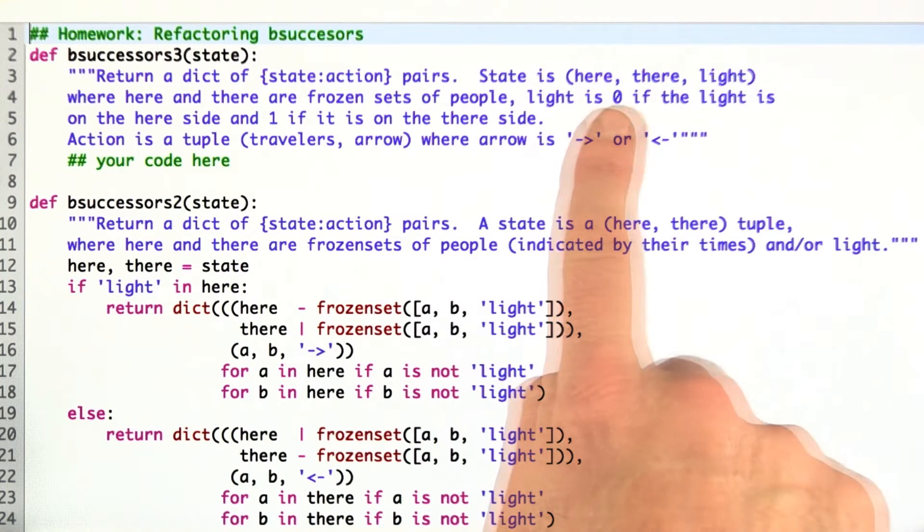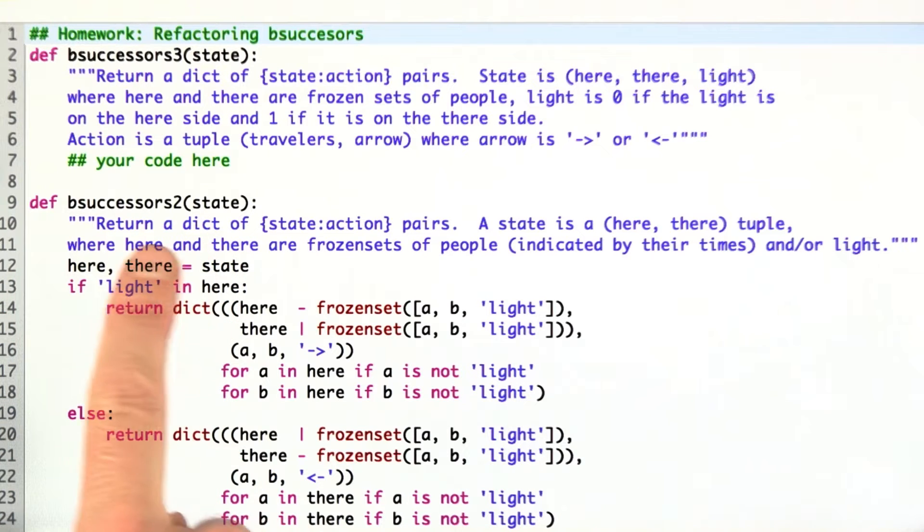We're going to represent them not as a set that included the light, because in the old bridge successor function, bSuccessor2, it just seemed kind of complicated that I had to deal with a special case of are the elements of the sets on the here and there side, are they people or are they the light? It just got a little bit overly verbose.